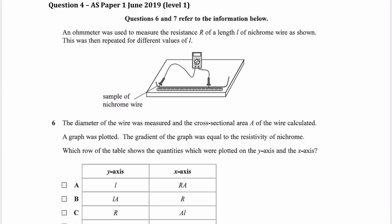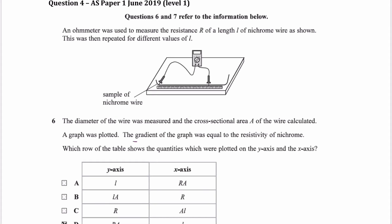An ohmmeter is used to measure the resistance of a length of nichrome wire. This is repeated for different values of L. The diameter is measured and the cross-sectional area is calculated. We plot a graph, and the gradient of the graph is the resistivity of nichrome.